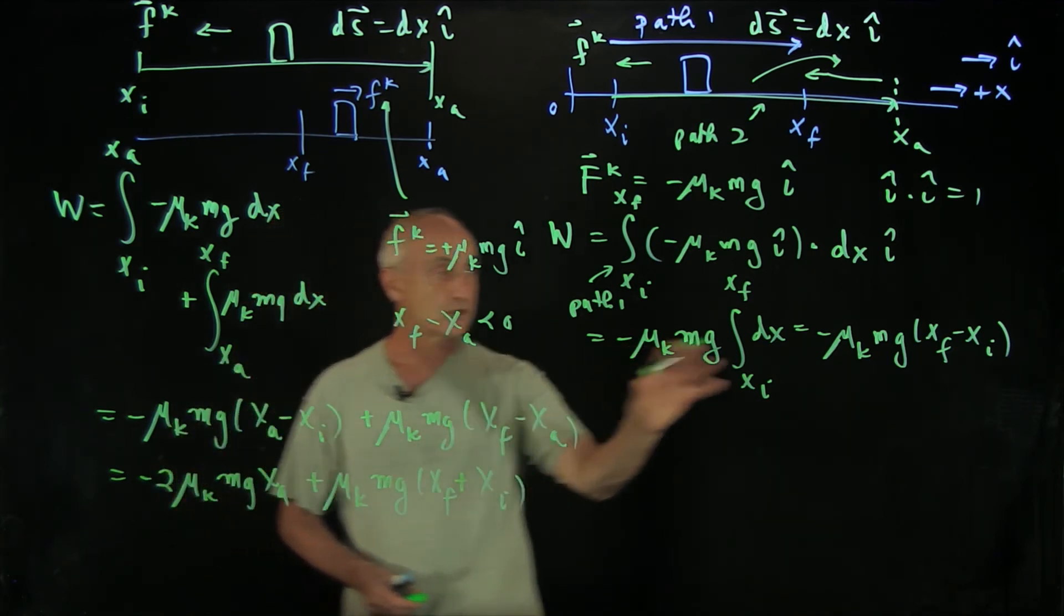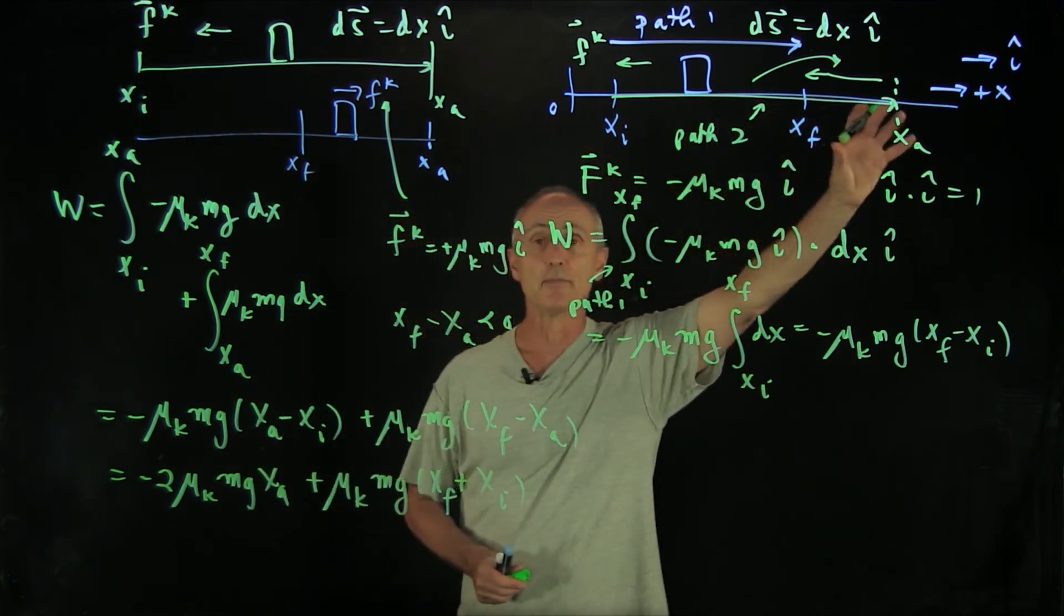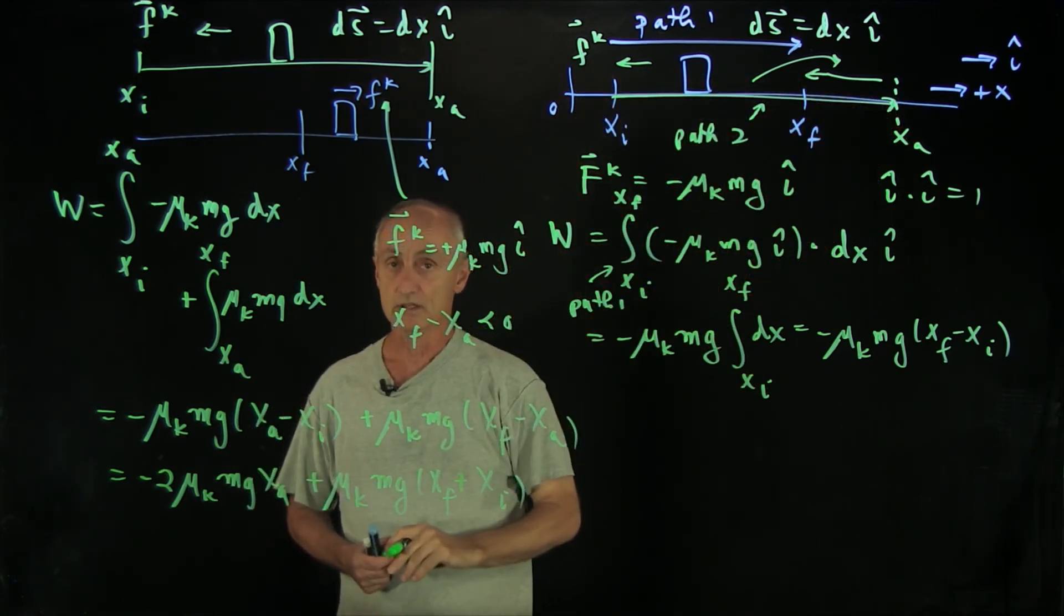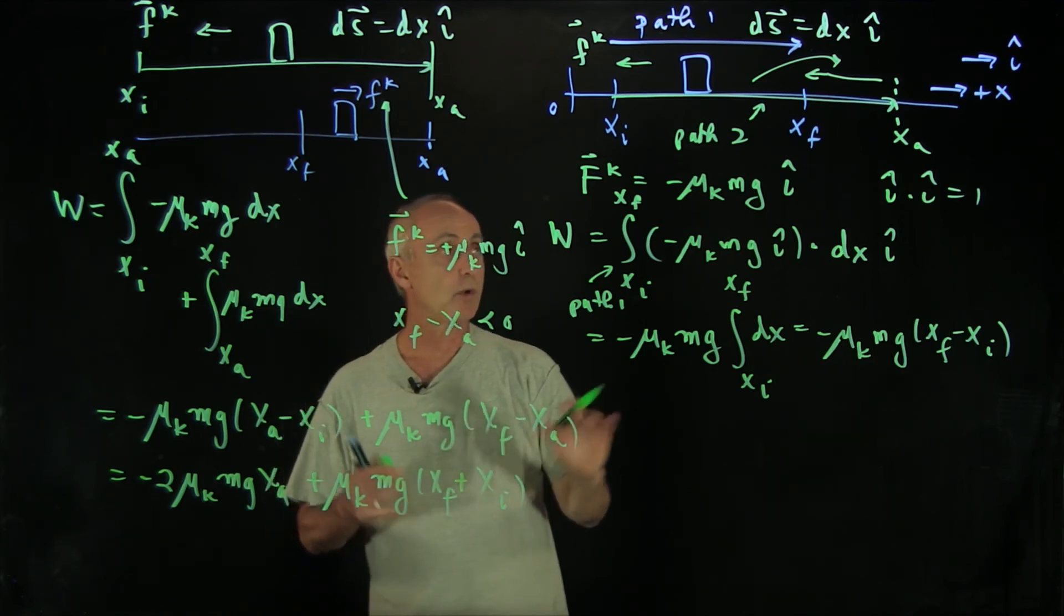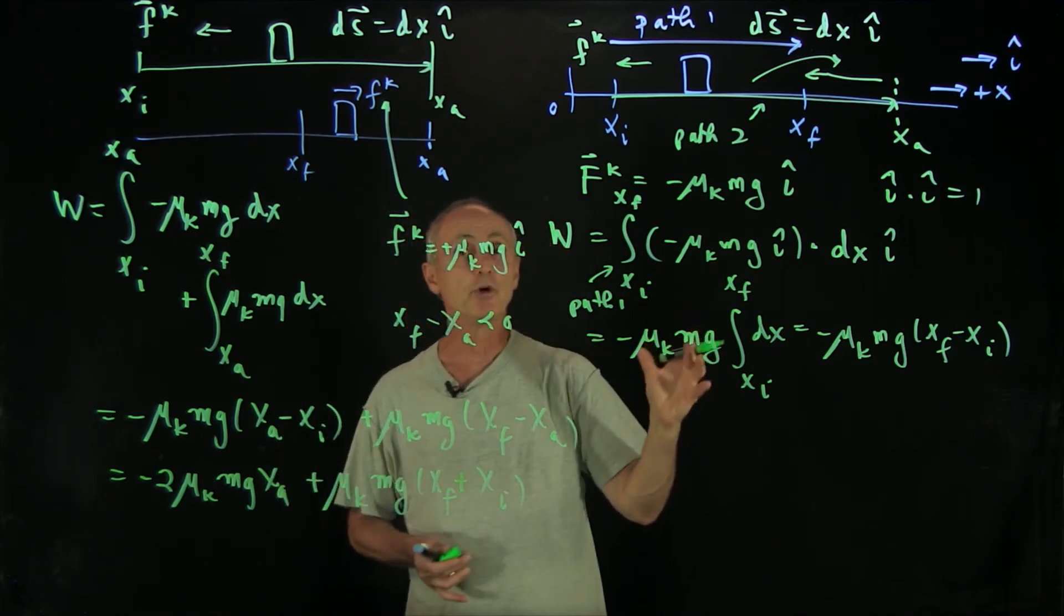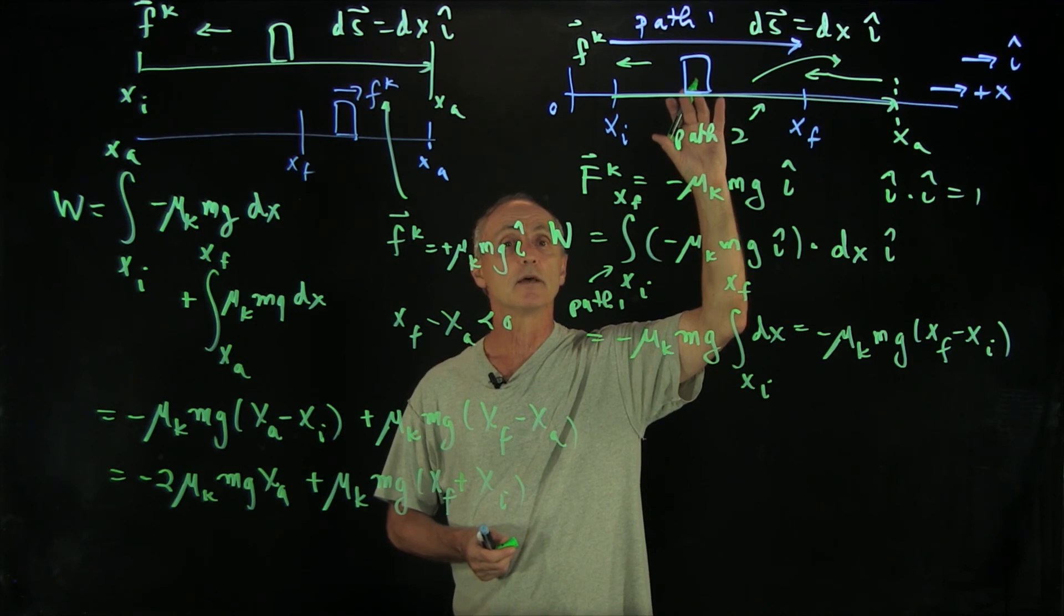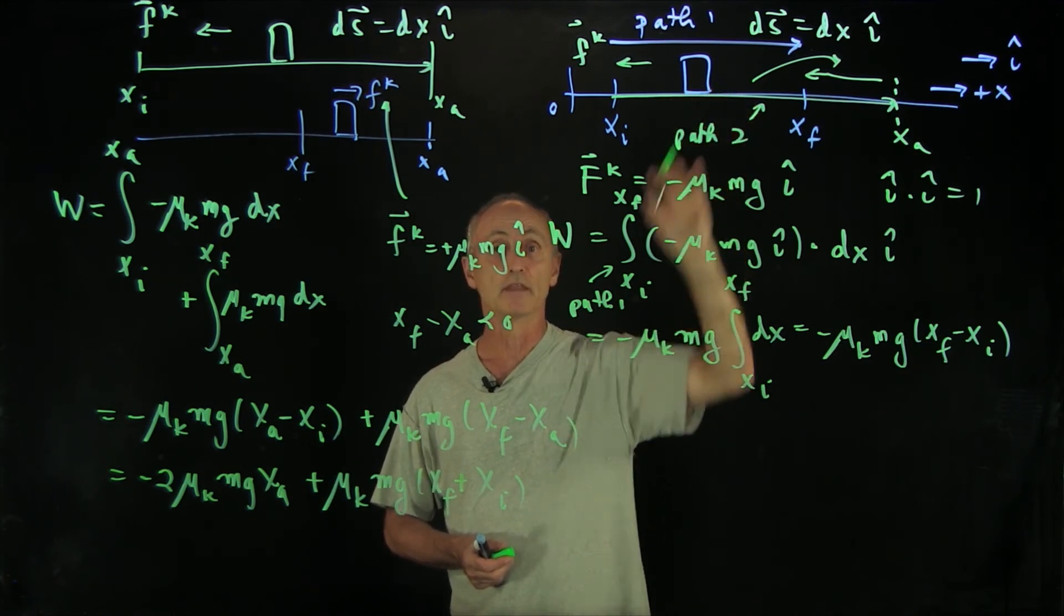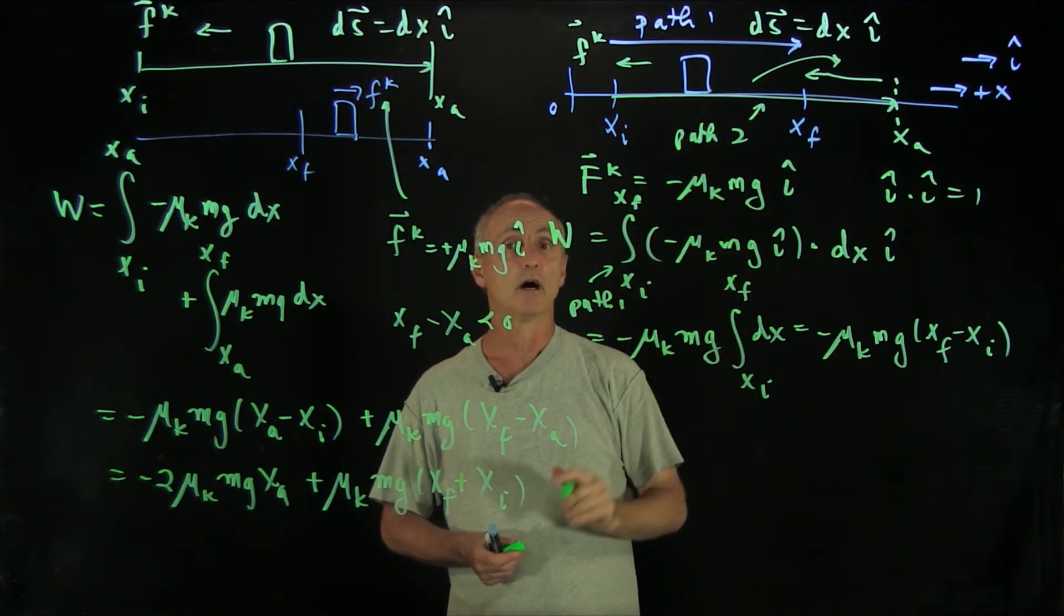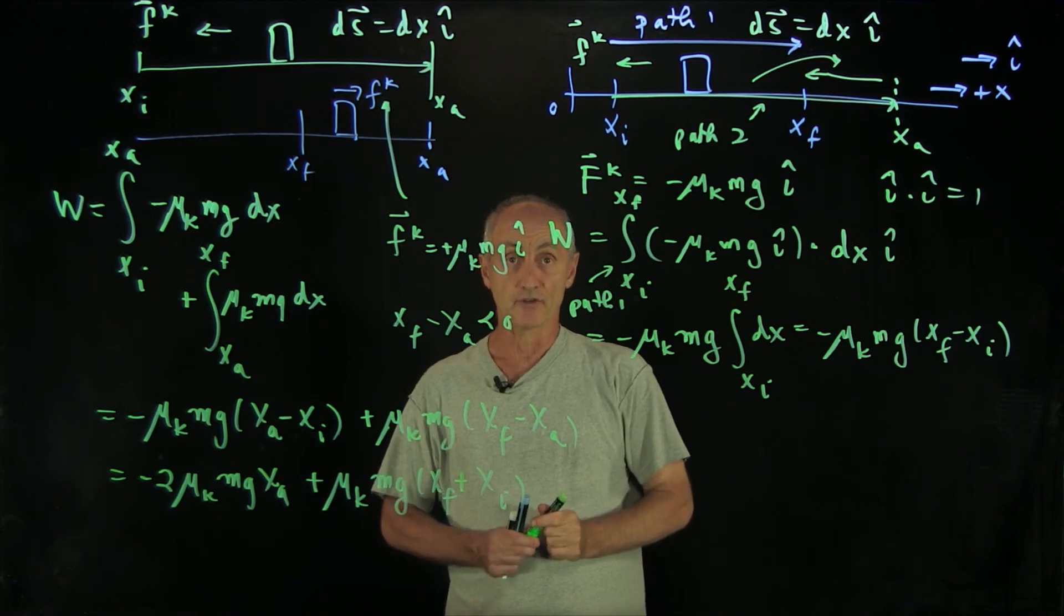So our answer is very different, because the amount that we've traveled is different. What we see here is an example of a force in which the work done is not path independent, but depends on the path taken from the initial to the final state.